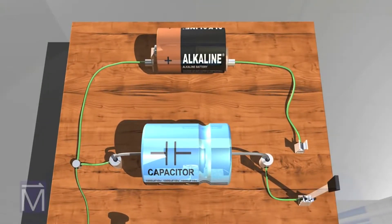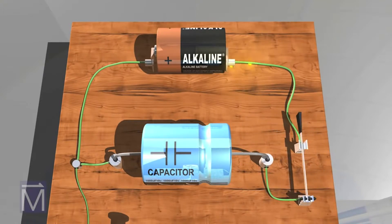First, we need to charge a capacitor. By closing the switch, we create a circuit that includes both the capacitor and the battery. Electrons flow from the battery to the capacitor where they are stored.